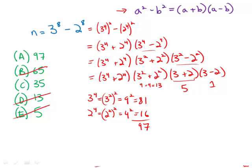81 plus 16 is 97. So it turns out that 97 is also a factor, which means the only one that is not a factor is 35, answer choice C.